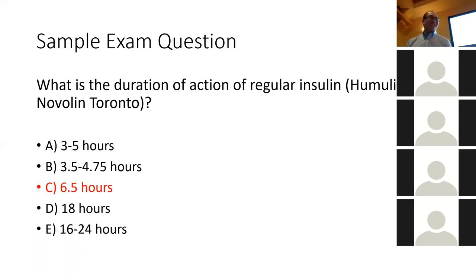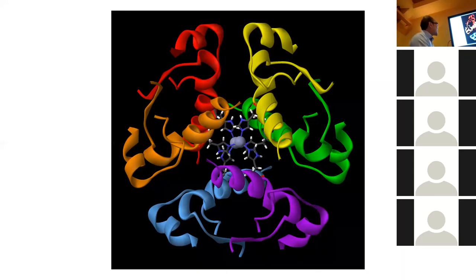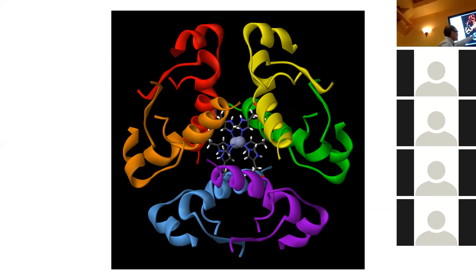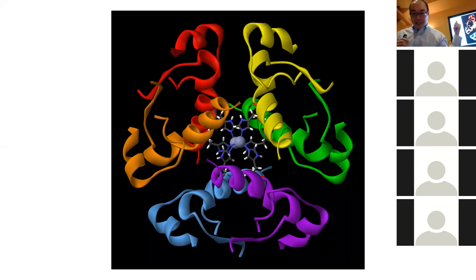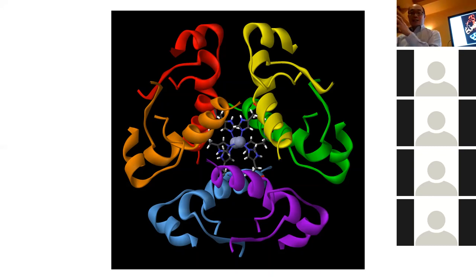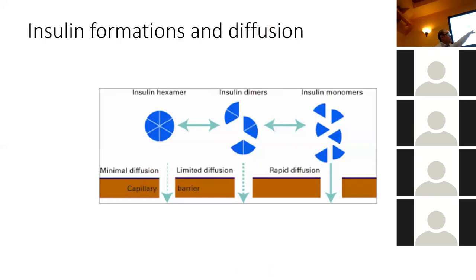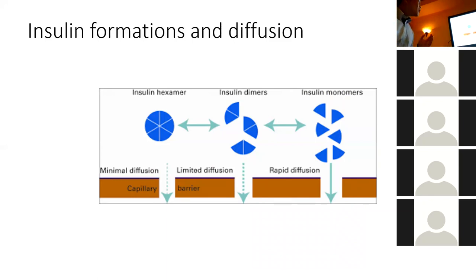Insulin has a tendency to form hexamers. Each molecule of insulin has that key-like structure. When exposed to high zinc or low pH, insulin molecules cluster together into hexamers. When clustered, they're really hard to degrade and last longer. But you need them to turn into monomers before they're active again. By altering the amino acid structure, you can change how insulin works.